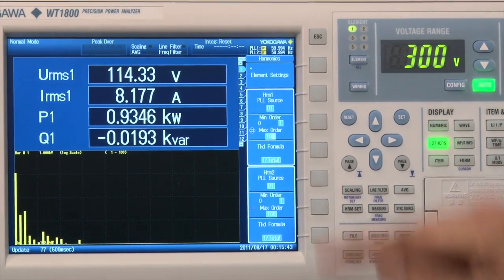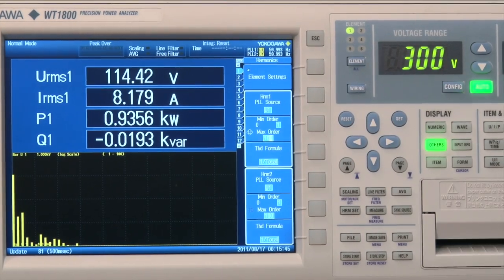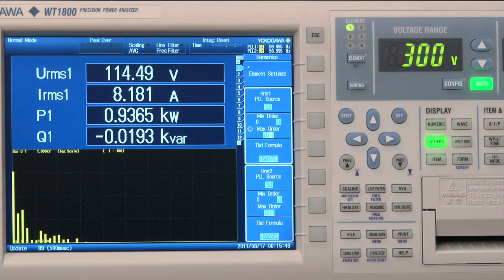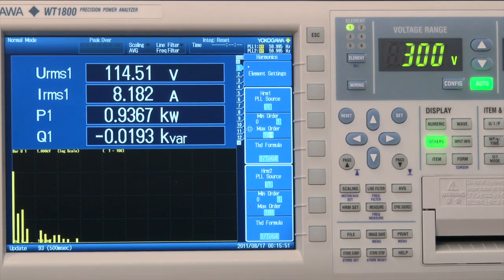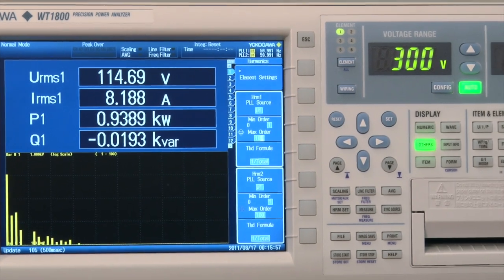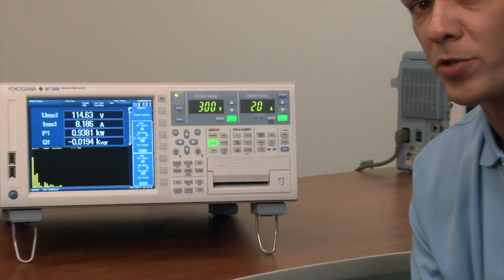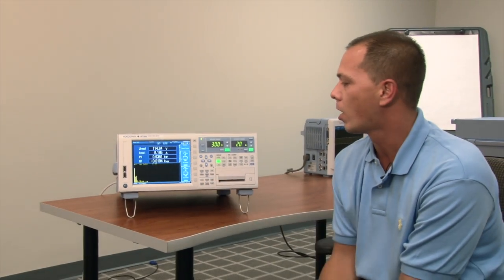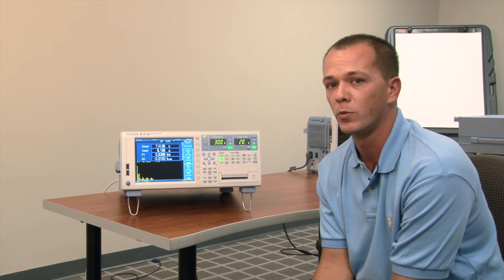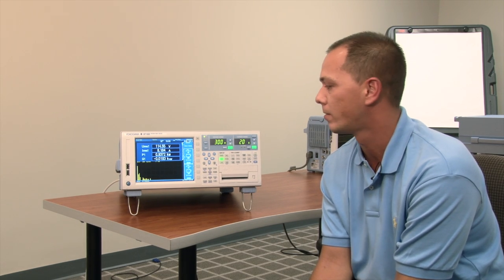On the harmonics, whether you have single or dual, this unit offers up to 500 orders at 50 or 60 Hertz fundamental. Now for anyone working in any kind of aircraft applications, oftentimes the fundamental frequency is very high and the maximum number of orders is also very high. This unit will allow you up to 255 orders with one kilohertz fundamental, again a leading industry standard.